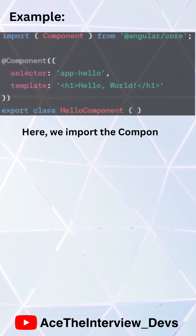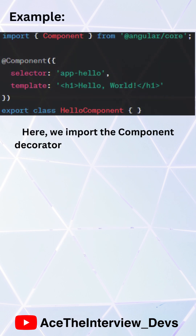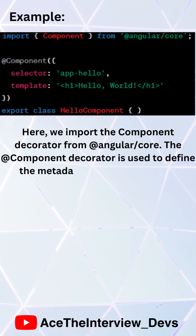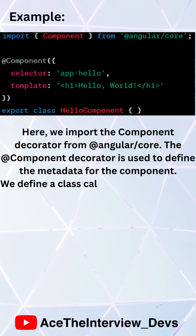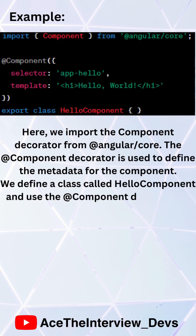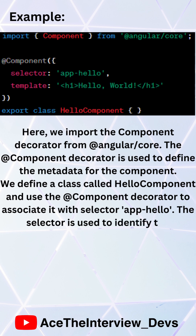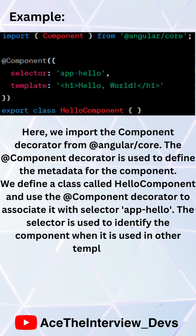Here, we import the component decorator from @angular/core. The @Component decorator is used to define the metadata for the component. We define a class called HelloComponent and use the @Component decorator to associate it with the selector app-hello. The selector is used to identify the component when it is used in other templates.